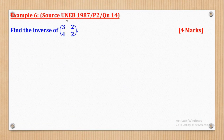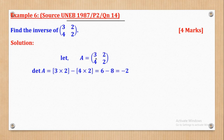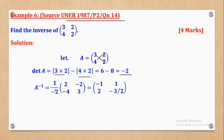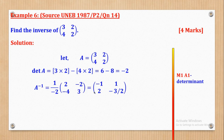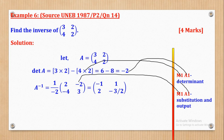Example 6 came from UNEB 1987, paper 2, question 14. Find the inverse of matrix A = [3, 2, 4, 2]. The determinant: product of major diagonal is 6, minus product of minor diagonal which is 8, giving negative 2 as the determinant. The inverse is 1 over negative 2 multiplied by the adjoint: where there was 3 we put 2, where there was 2 we put 3; the two positive off-diagonal entries (2 and 4) each become negative. Applying the scalar of 1 over negative 2 gives the inverse matrix. M1 for substitution, A1 for output throughout.